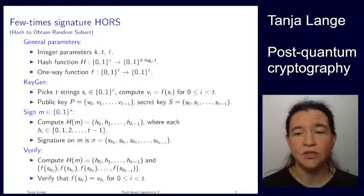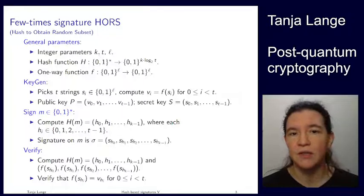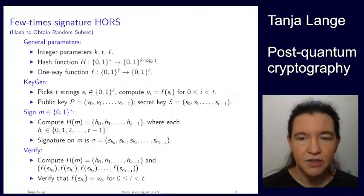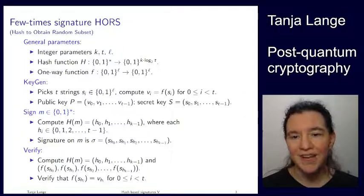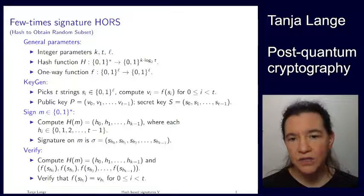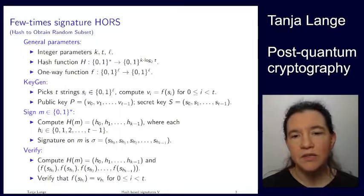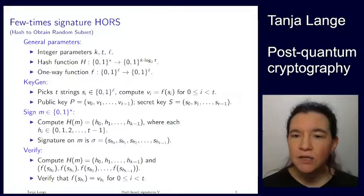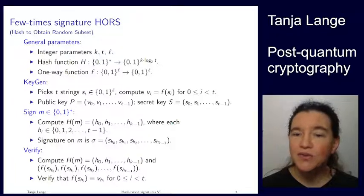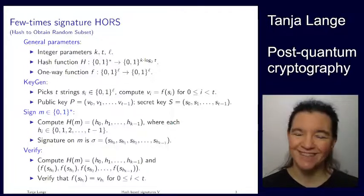So this was just a short summary of an example, namely the HORS few-time signature scheme, to show you how one can have something which doesn't crumble instantly if you have one signature revealed. But as you can see on the exercise sheet, there is always some security degradation, but it's not as bad.